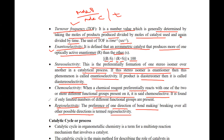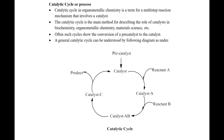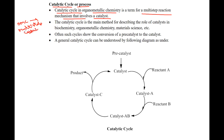So these were some terms used in the catalytic process. Now let's discuss the catalytic cycle. The catalytic cycle is the main method for describing the role of the catalyst — in biochemistry, organometallic chemistry, metal chemistry, and so on.